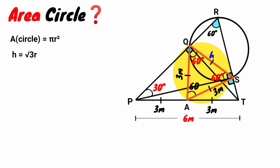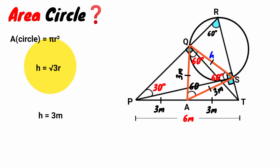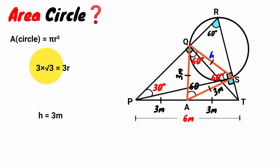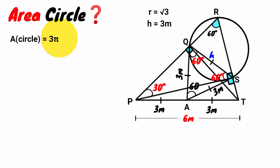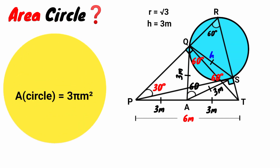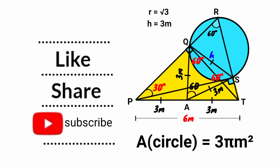Since all sides of the equilateral triangle are equal and this side is 3 meters, h equals 3 meters. Substituting into the equation h = root 3 times r: 3 equals root 3 times r. Multiplying both sides by root 3 gives 3r equals 3 root 3, so r equals root 3. Substituting into the area formula: area equals pi times (root 3) squared equals pi times 3, so the area of the circle equals 3pi square meters. Thank you for watching — please subscribe, like, share, comment, and turn on notifications.